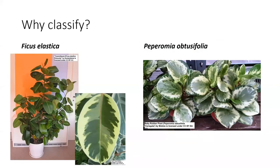So why do we even classify plants or living things at all? As humans, it's really to make sense of our world, to recognize exactly what species we're talking about. For instance, there can be many common names for one thing, but there's only one scientific name.